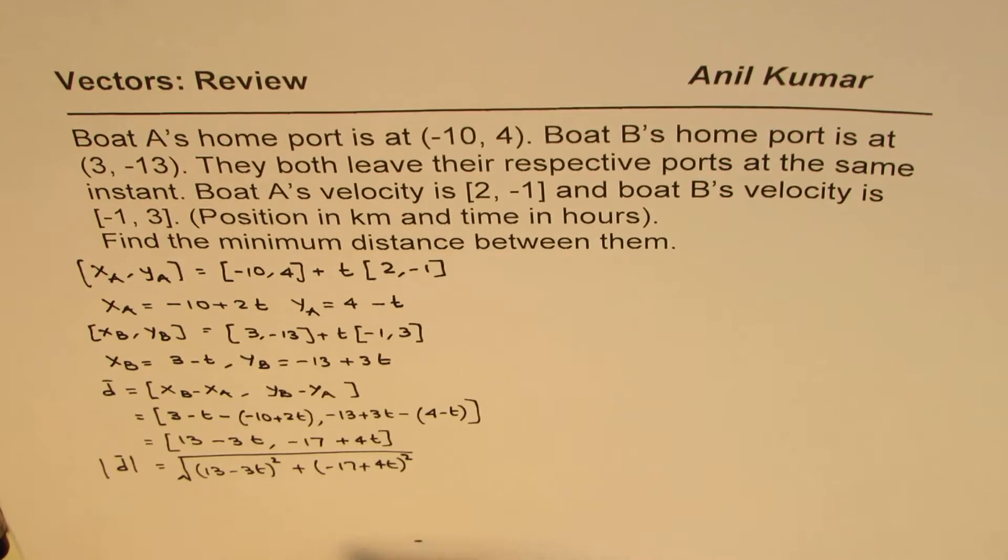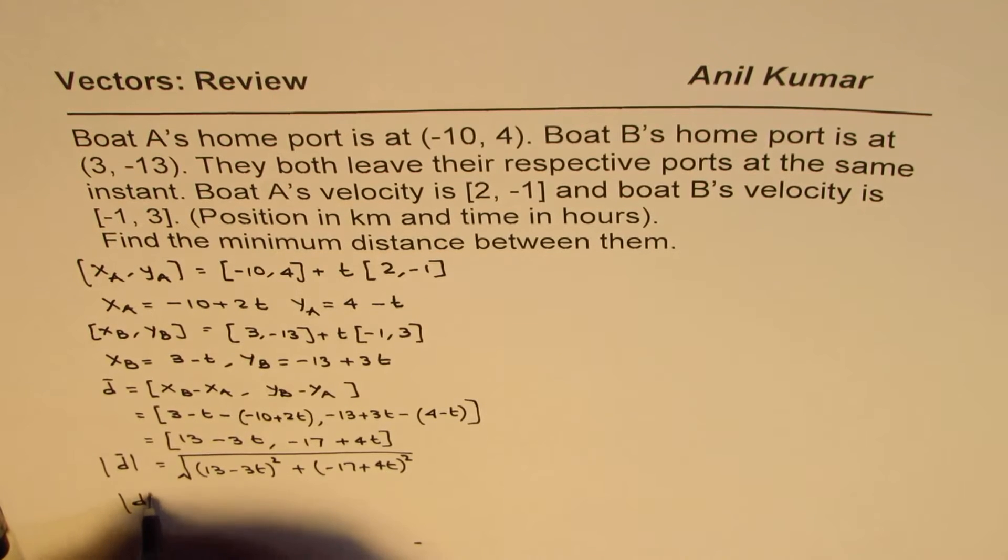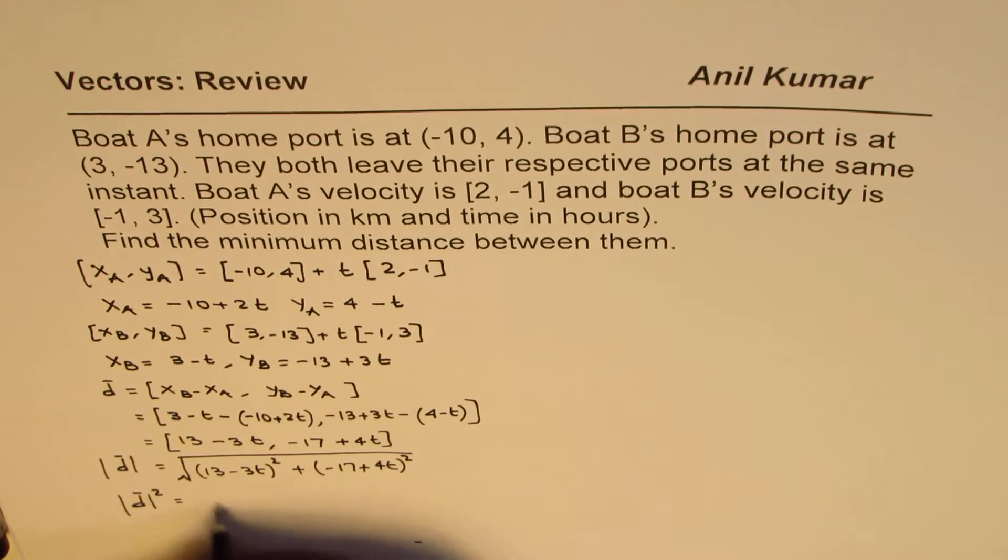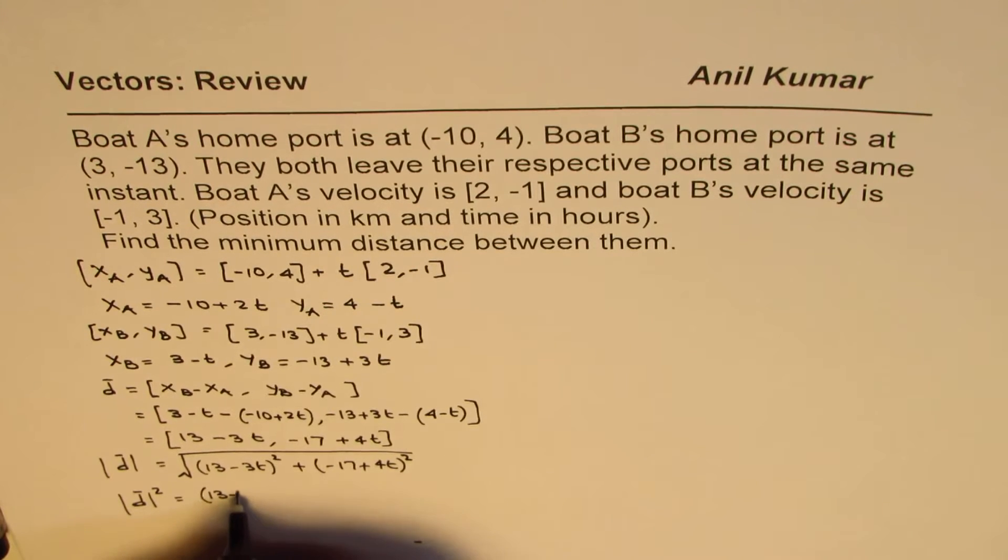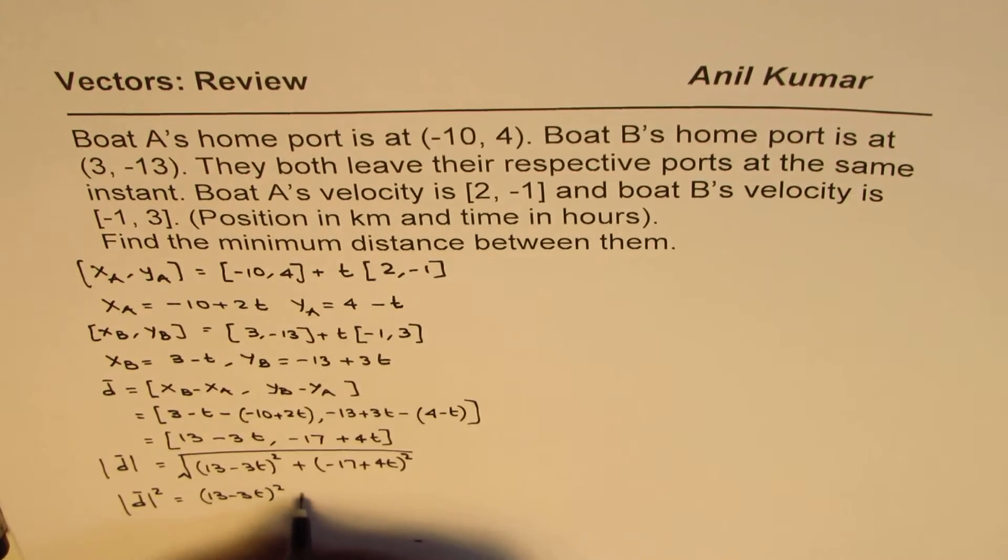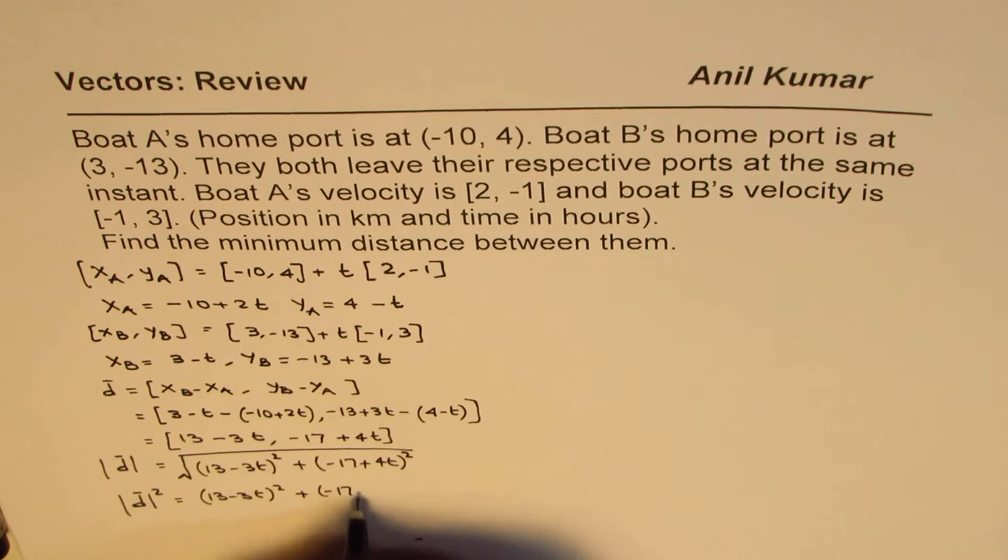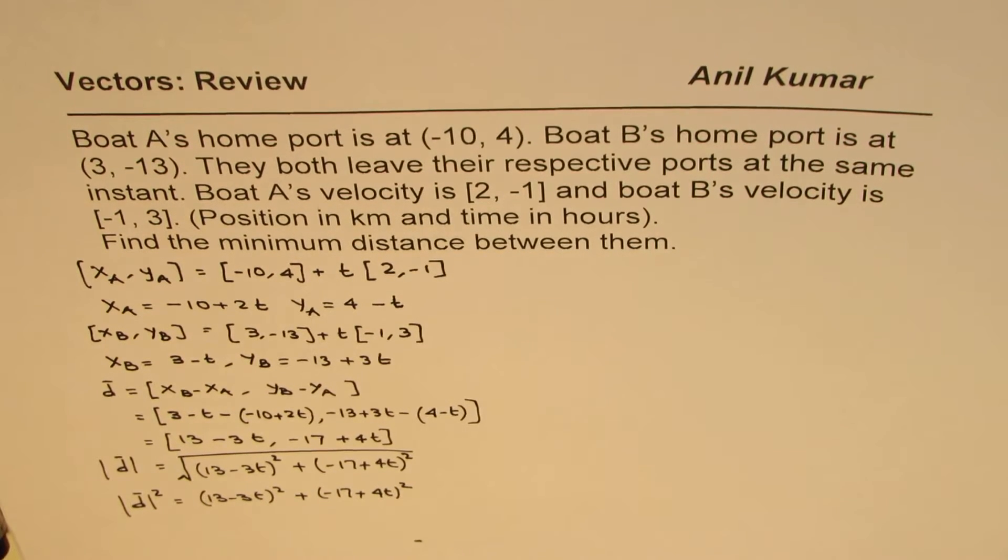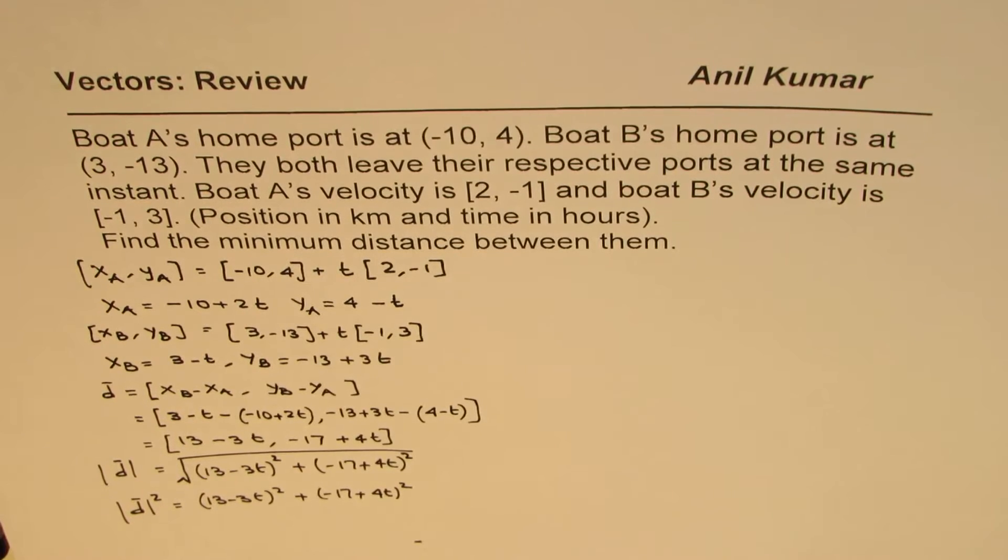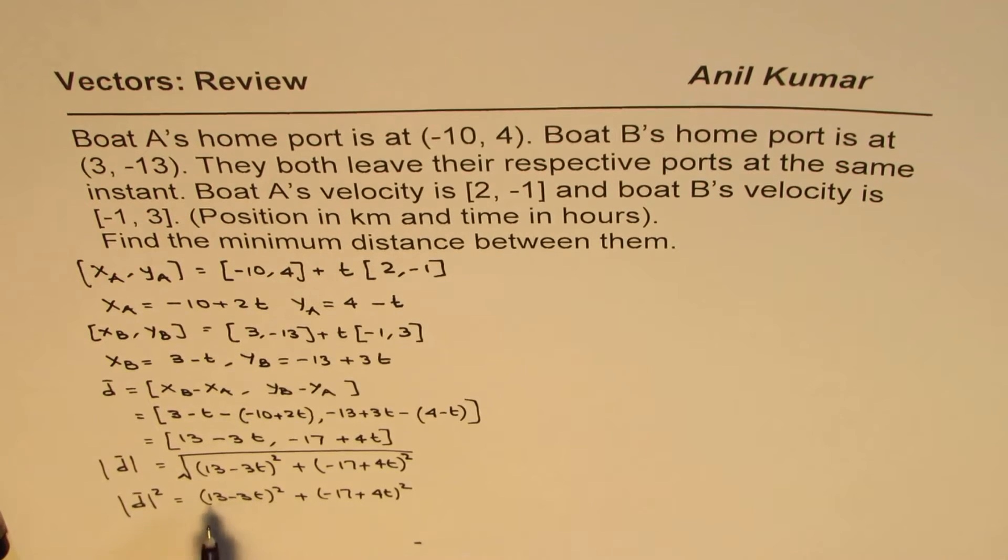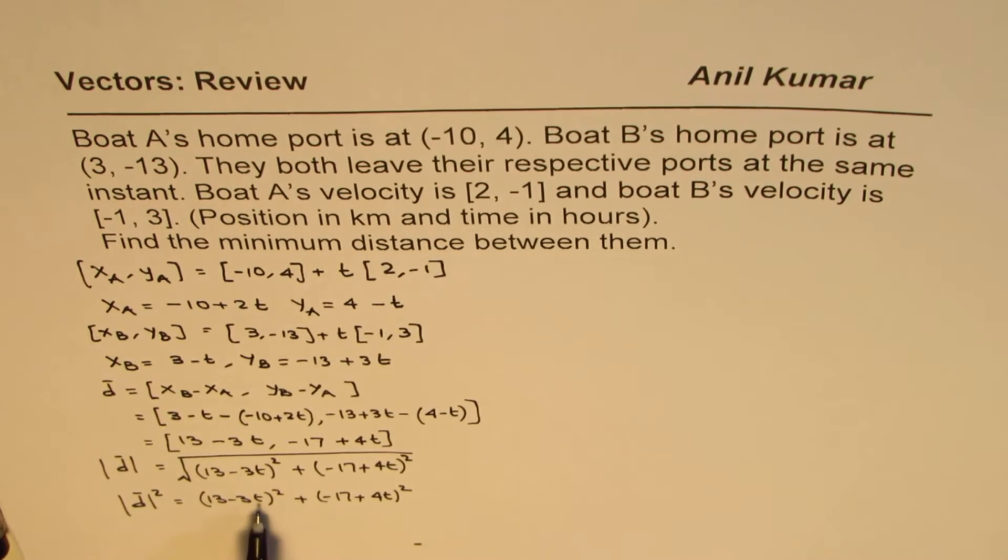If you want to minimize distance, then square of this also should be minimum. That is to say, (13 - 3t)² + (-17 + 4t)² should also be minimum. That's the whole idea. So we'll minimize the square of the distance, which will give us some value of t. We'll use that value of t to find the answer.